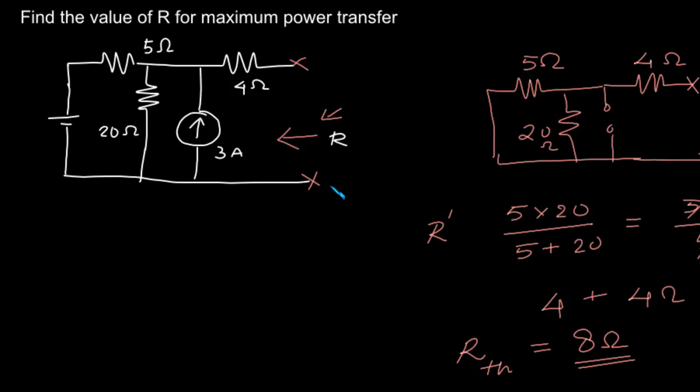We know for maximum power transfer, the value of resistance R should be 8 Ohm.